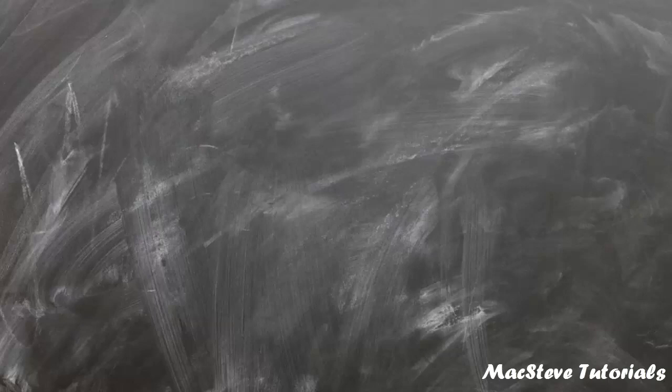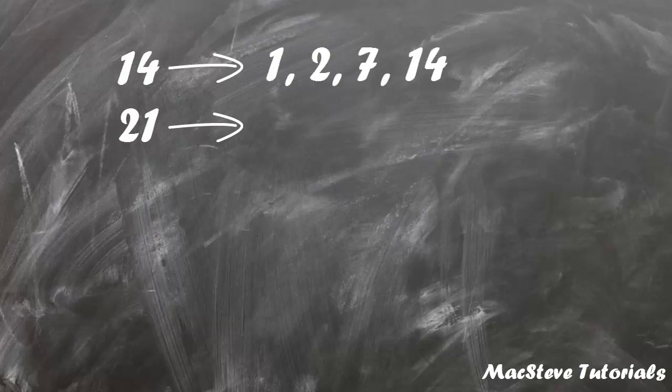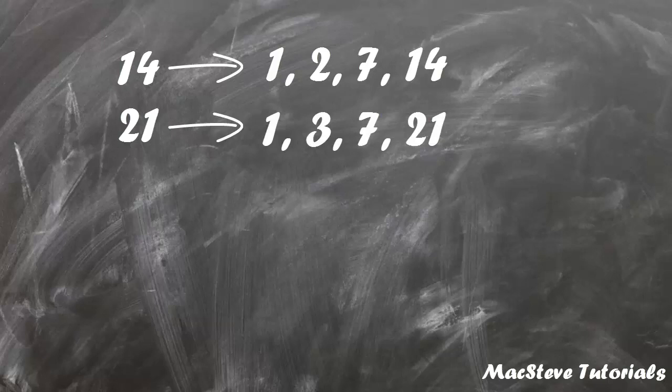First way is to list the factors of 14 and 21. The factors of 14 are 1, 2, 7 and 14. While the factors of 21 are 1, 3, 7 and 21. From these two lists you can see that the largest common factor is 7, and that is the greatest common factor for 14 and 21.